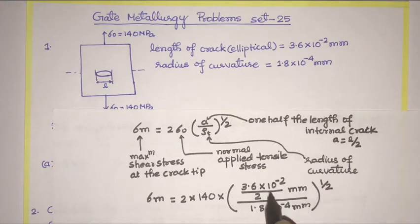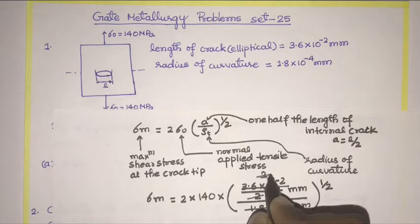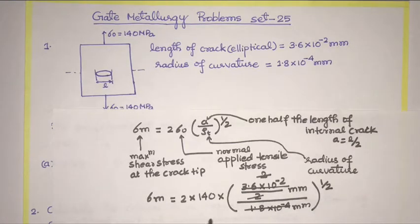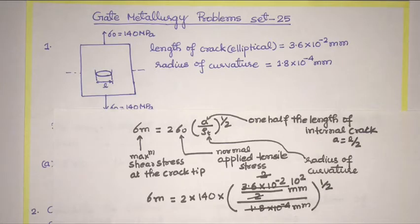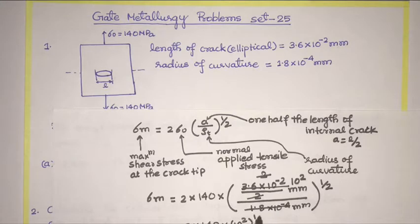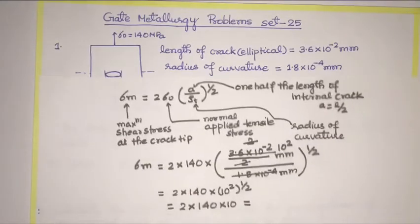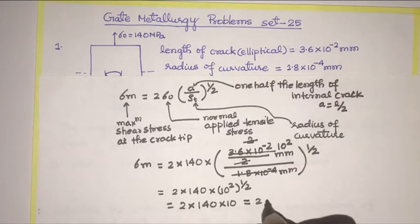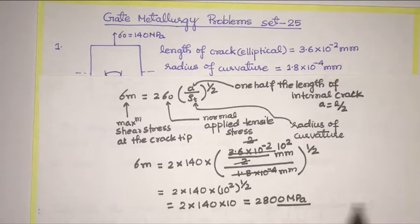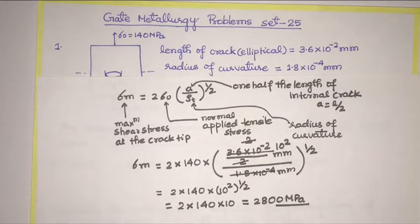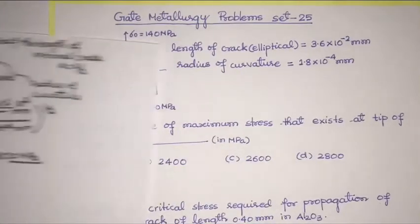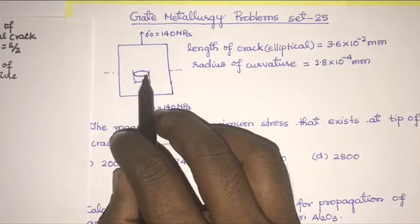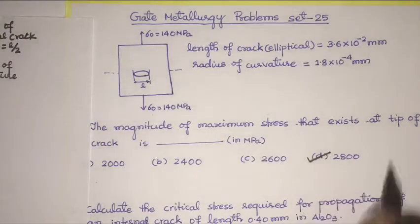Solving this, the 2 and 2 cancel out, giving us 10⁻² divided by 10⁻⁴, which is 10². So we get 2 × 140 × 10² whole to the power 1/2, which gives 10. Solving this gives a value equal to 2800 megapascal. So the stress at the tip of this crack is 2800 megapascal.